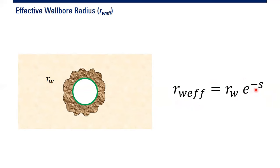The effective wellbore radius rw_effective equals rw multiplied by e to the power of minus s, where s is the skin factor. So although we still have the original rw, the capacity and productivity of the well is now changed, such that we use this effective wellbore radius: rw multiplied by e to the power of minus skin factor.